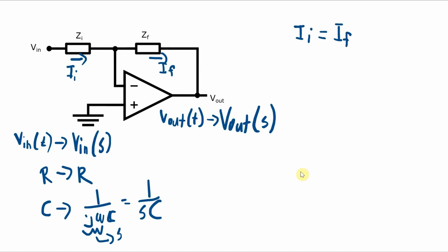The current ii and the current if are equal to each other. ii, that current, the input current, is Vin over zi which is equal to negative Vout over zf. Remember this right here is a virtual ground so this point is at zero, so the voltage across zi is Vin and the voltage across zf is negative Vout.